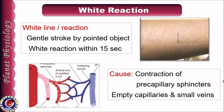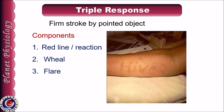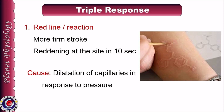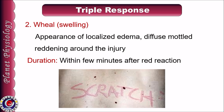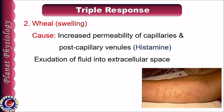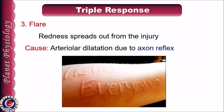If the stroke by the pointed object is firm, the skin reacts in the form of a triple response: immediate appearance of a red line, followed by wheal, and then flare. The red line appears within 10 seconds due to dilation of capillaries in response to deep pressure. Within a few minutes, a localized edema with diffuse mottled reddening appears around the injury — called wheal. Wheal is caused by increased permeability of capillaries and post-capillary venules, leading to exudation of fluid into extracellular spaces. Histamine plays an important role in this phase.